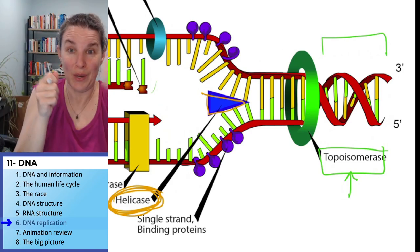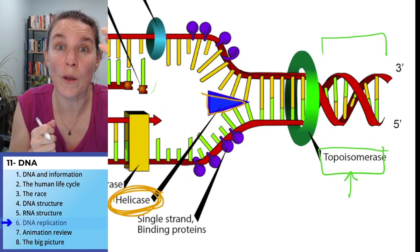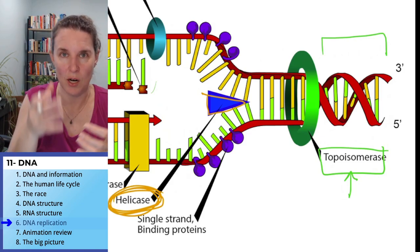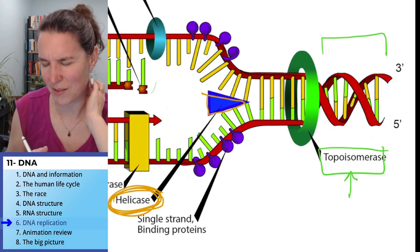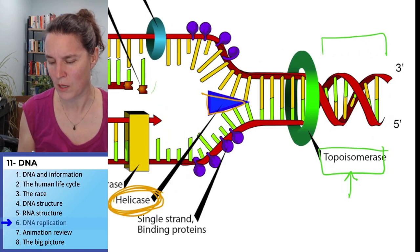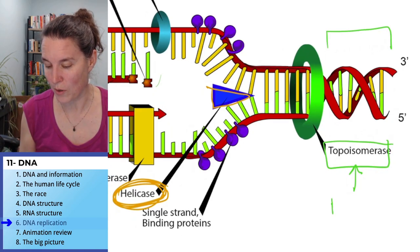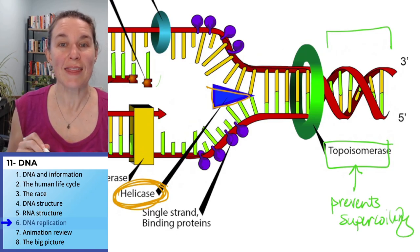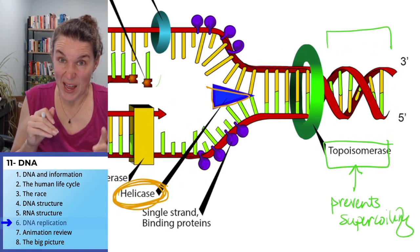Like somehow you have to release the pressure and you can either let the whole thing spin and that can let you continue unwinding your rope. Or you end up with a super coiled mess up high and unraveled yarn down low. Did I just confuse the crap out of you? Topoisomerase prevents super coiling.